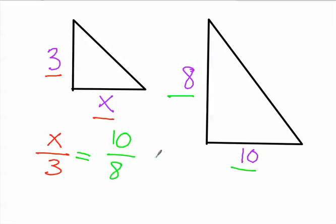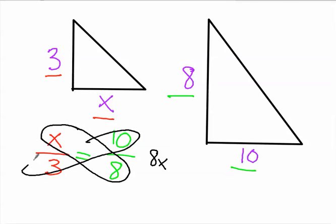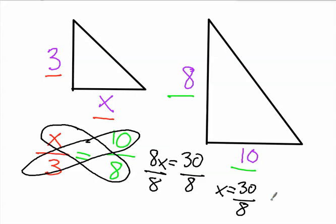And then you just simply cross-multiply. So you have 8x, because you can cross-multiply here. And then you cross-multiply here. And 10 and 3 equals 30. Divide both sides by 8. x equals 30 over 8, which would equal 15 over 4. And I'm just going to leave the answer like that. And that's how you can solve for similar triangles.